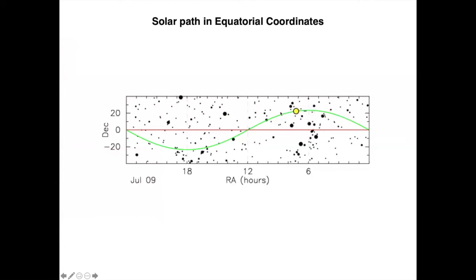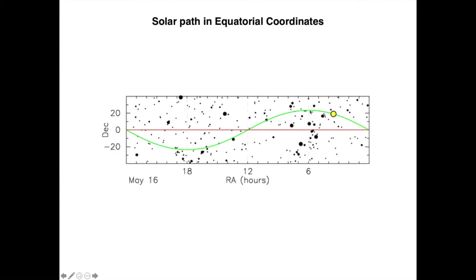The sun first goes up in declination, reaches a maximum point, starts to go down, goes back to the celestial equator — that's an equinox — and then continues to 18 hours of right ascension at maximum south declination, then goes up again towards the equator. This point on the equator is the vernal equinox, the beginning of spring. The maximum point is the summer solstice in the northern hemisphere. Then the fall equinox — the September equinox in the northern hemisphere — and then in December, the winter solstice, winter in the northern hemisphere and summer in the southern hemisphere, before going back to spring.